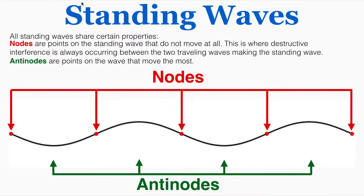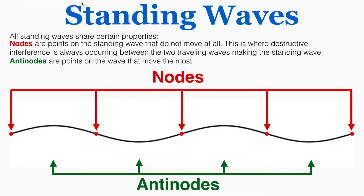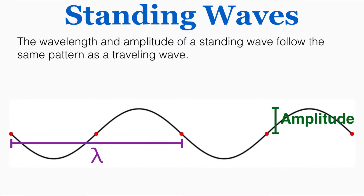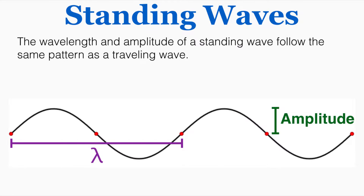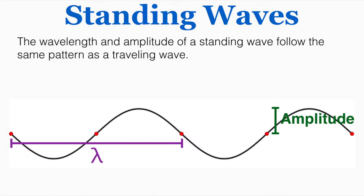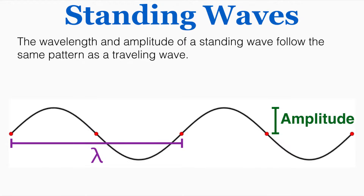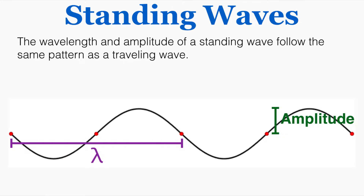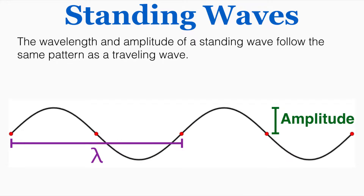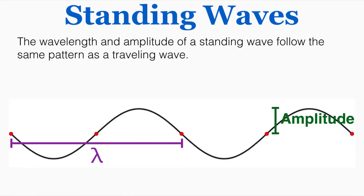Antinodes are the points on the wave that move the most — the places where it reaches its maximum and minimum displacement. The wavelength and amplitude of a standing wave follow the same pattern as a traveling wave. Students sometimes assume the wavelength is just the distance between two nodes, but it's still the length of one complete wave pattern going all the way up, all the way down, and back to where it started. That purple line shows the full wavelength of this standing wave.